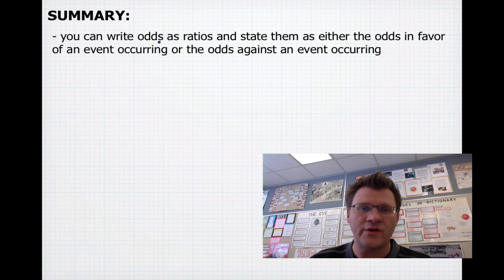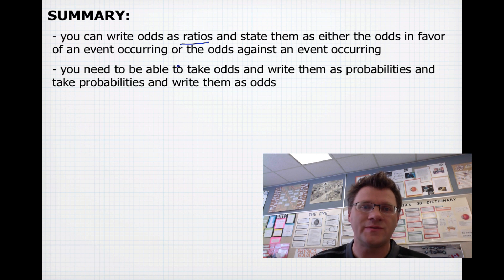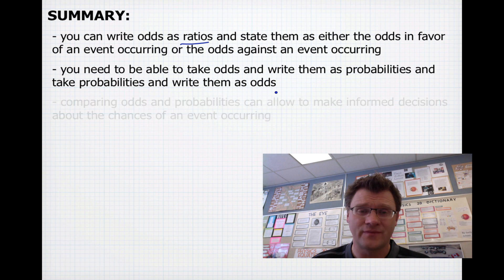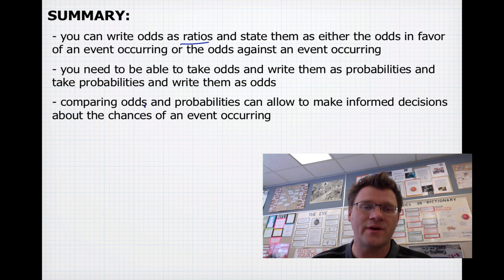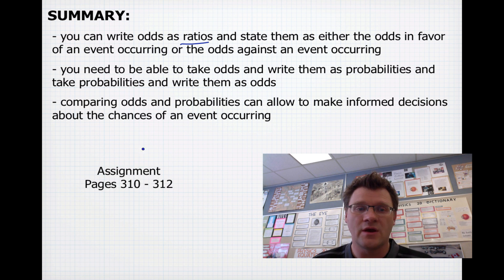In summary, you can write odds as ratios and state them as either the odds in favor of or the odds against an event occurring. You need to be able to take odds and write them as probabilities, and take probabilities and write them as odds. You also need to be able to compare odds and probabilities to make informed decisions about the chances of an event occurring. Your assignment is on pages 310 to 312. Good luck, and we'll see you in class.